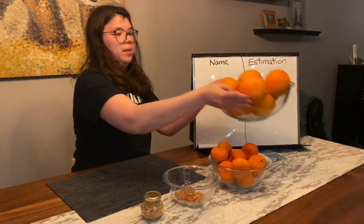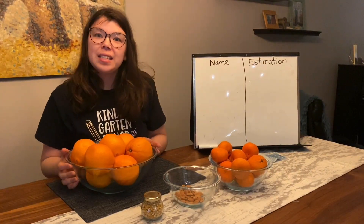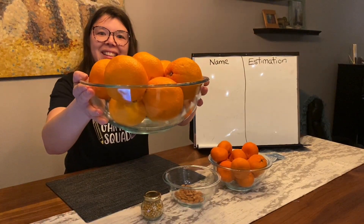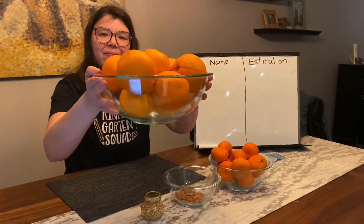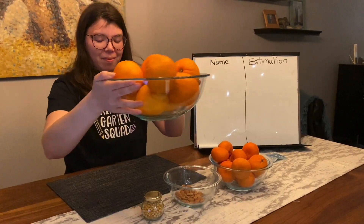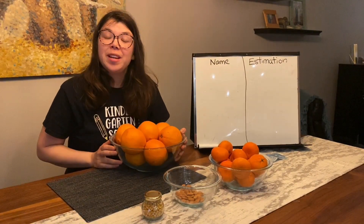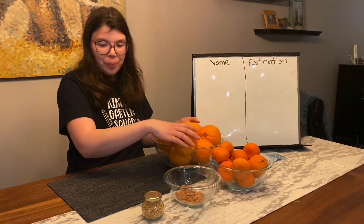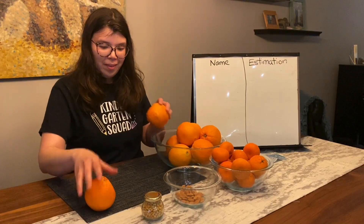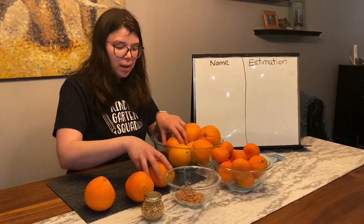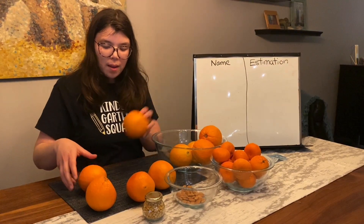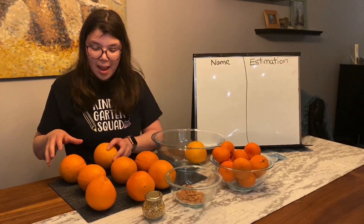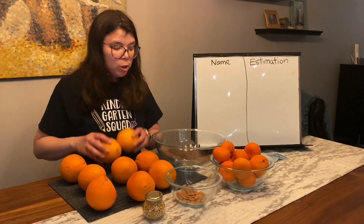The first bowl is full of oranges and that's the biggest object that I've collected from my kitchen. What do you estimate? This is going to be our easiest question because oranges are the biggest, so there's lots of space between them. Let's count together: one, two, three, four, five, six, seven, eight, nine. There were nine oranges in that bowl.